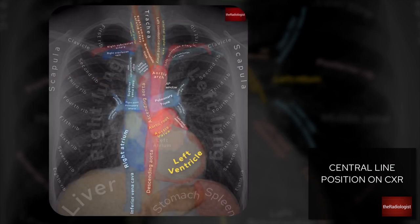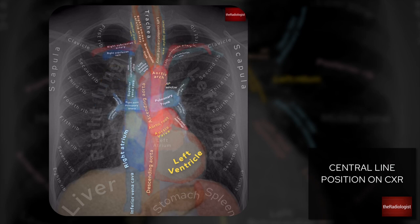Looking at this chest x-ray diagram, where we want the line to head is the SVC going into the right atrium, coming in via either the right or left brachiocephalic vein via the internal jugular or subclavian veins. The line needs to be coursing along the right side of the mediastinum. Before assessing the x-ray, check for rotation — ensure the spinous processes are equidistant from the medial clavicles. You don't want the line ending up medially towards the aortic root and ascending aorta.